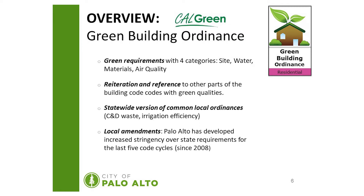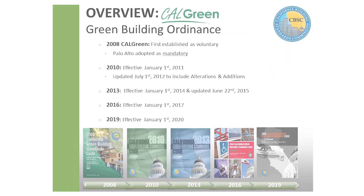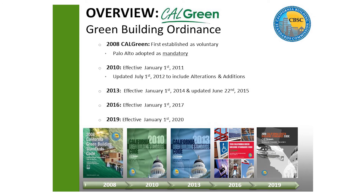In regard to local amendments, Palo Alto has increased stringency over state requirements for the last five code cycles since 2008. Palo Alto has a long history of being committed to the Cal Green code. During 2008, Palo Alto adopted the requirements as mandatory when it was a statewide voluntary program. Palo Alto also adopted the requirements during the 2010 code cycle. For the 2019 code, the effective date will be January 1st, 2020.